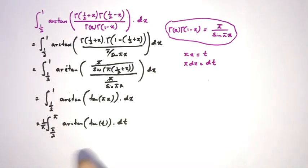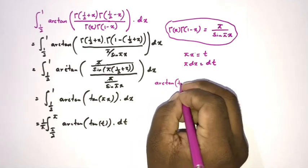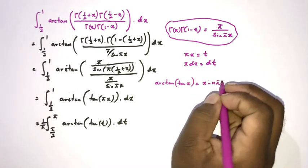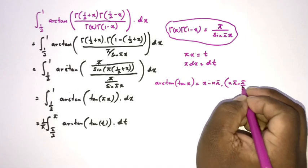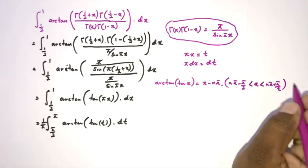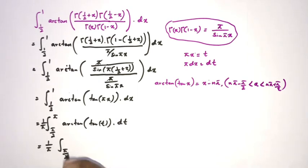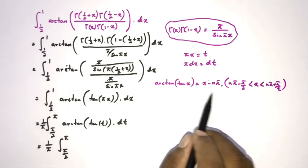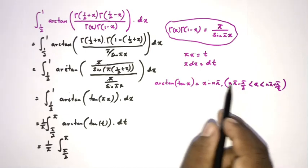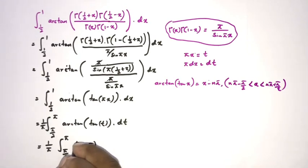We know that arctan(tan(x)) = x − nπ when nπ − π/2 < x < nπ + π/2, where n is an integer. In our interval t ∈ (π/2, π), we have n = 1, so arctan(tan(t)) = t − π. Our integral becomes (1/π) · integral from π/2 to π of (t − π) dt.